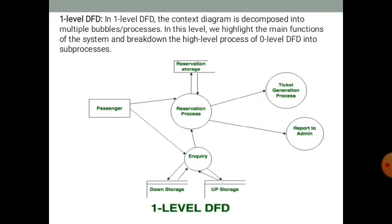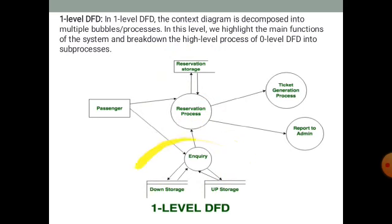In the reservation process, the passenger enters their name and destination. The admin receives a notification that a ticket has been booked. This information is stored in the reservation storage data warehouse. An inquiry process is also shown, with up/down storage for data. The data storage indicates that this data can be used later — for inquiry purposes or for accessing passenger information — by different processes.